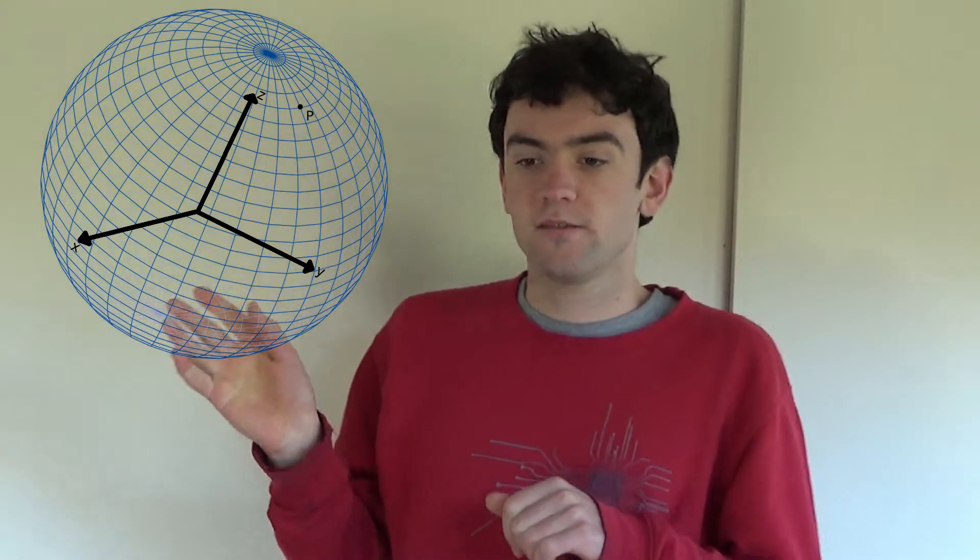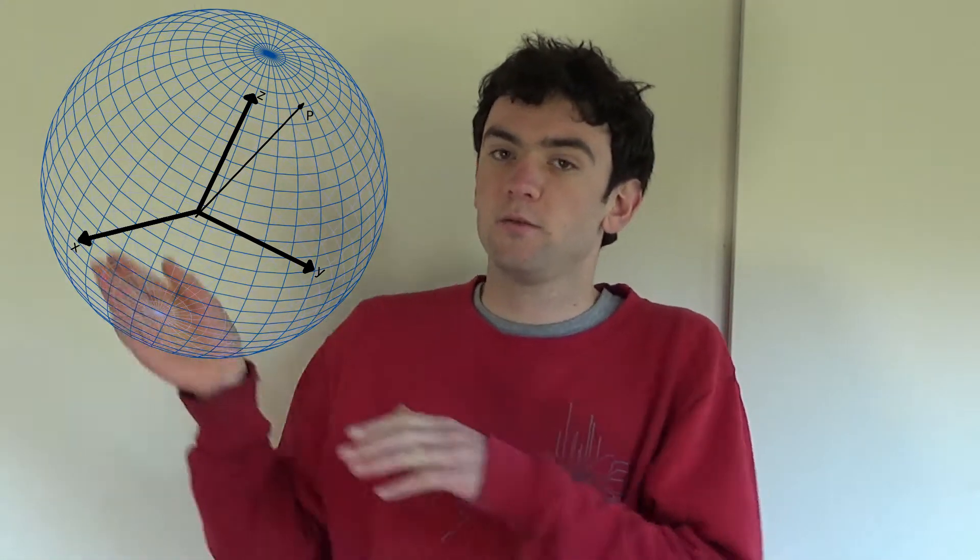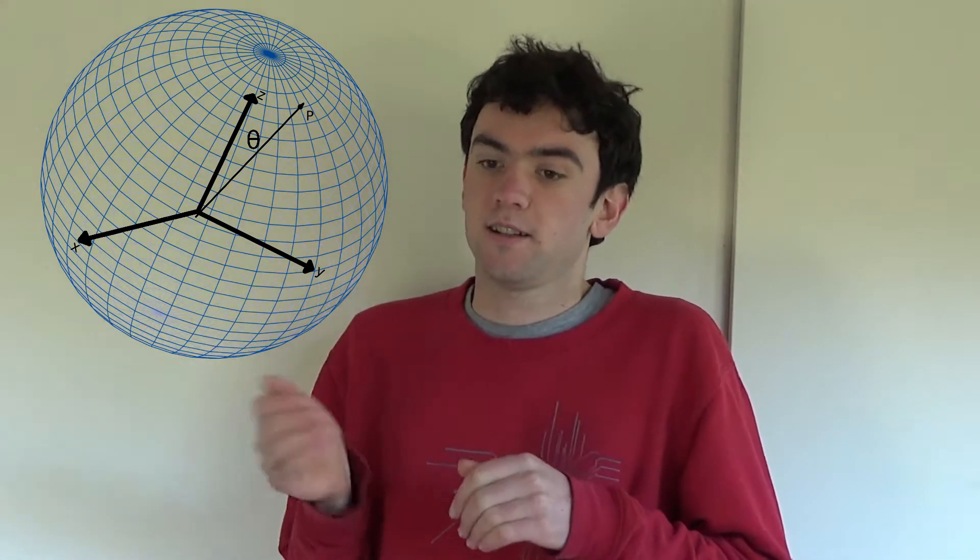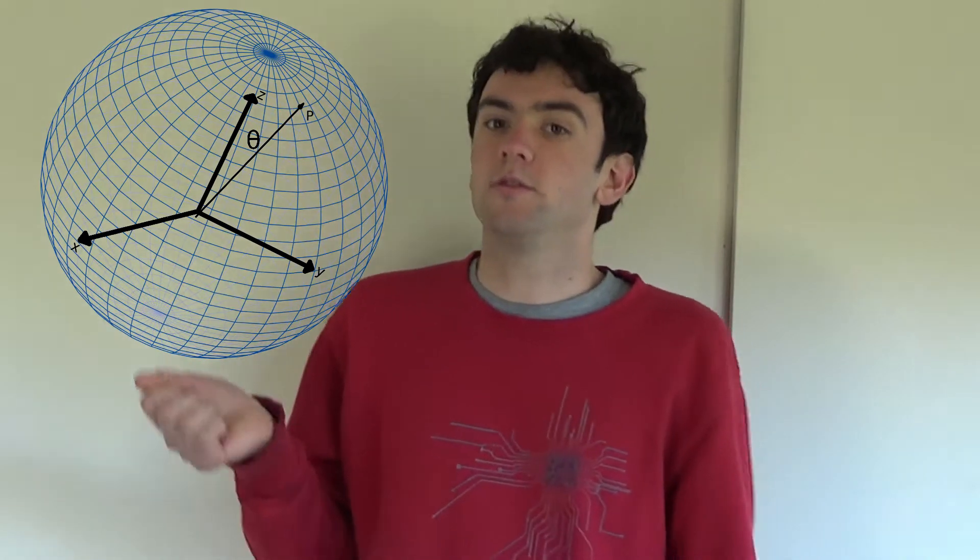Next, I need to know where I am relative to the poles, so I take another angle, which is the angle between my point and the z-axis. This is the polar angle, or latitude.